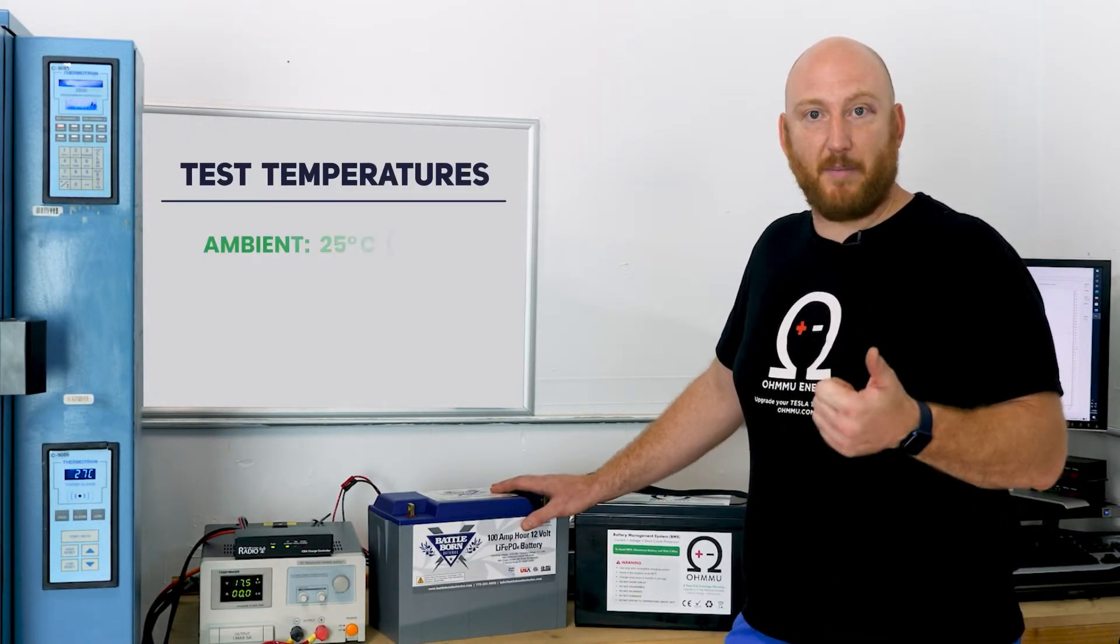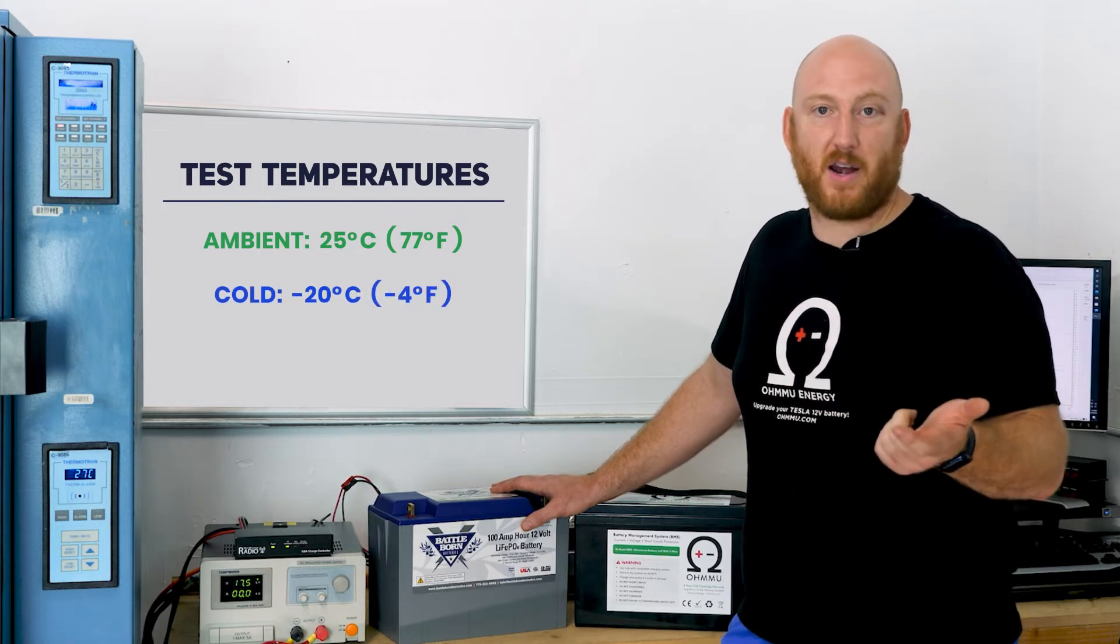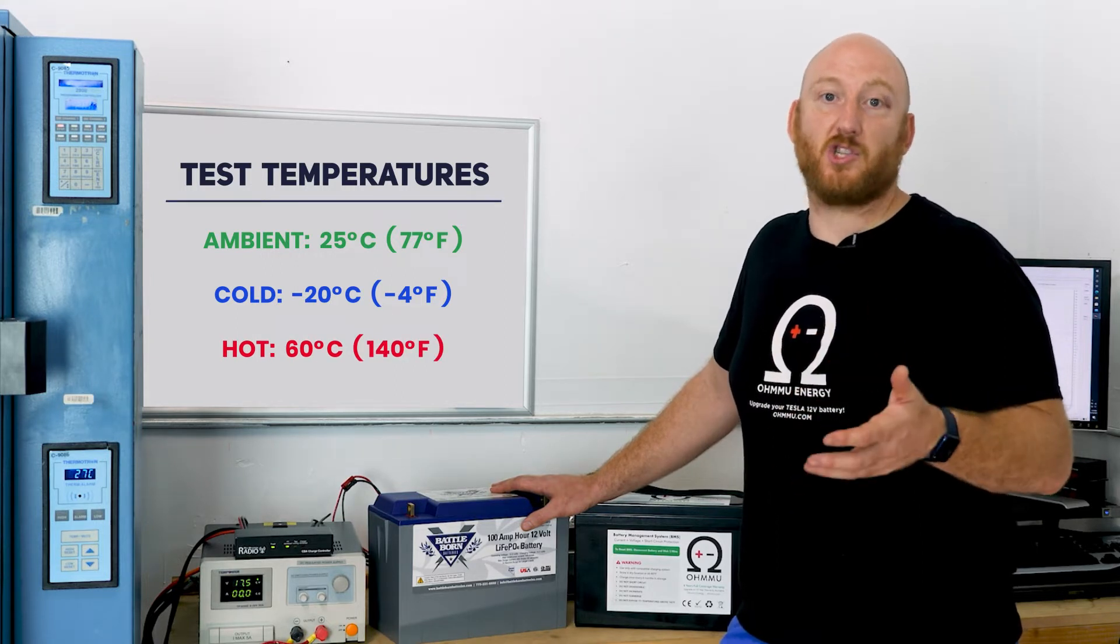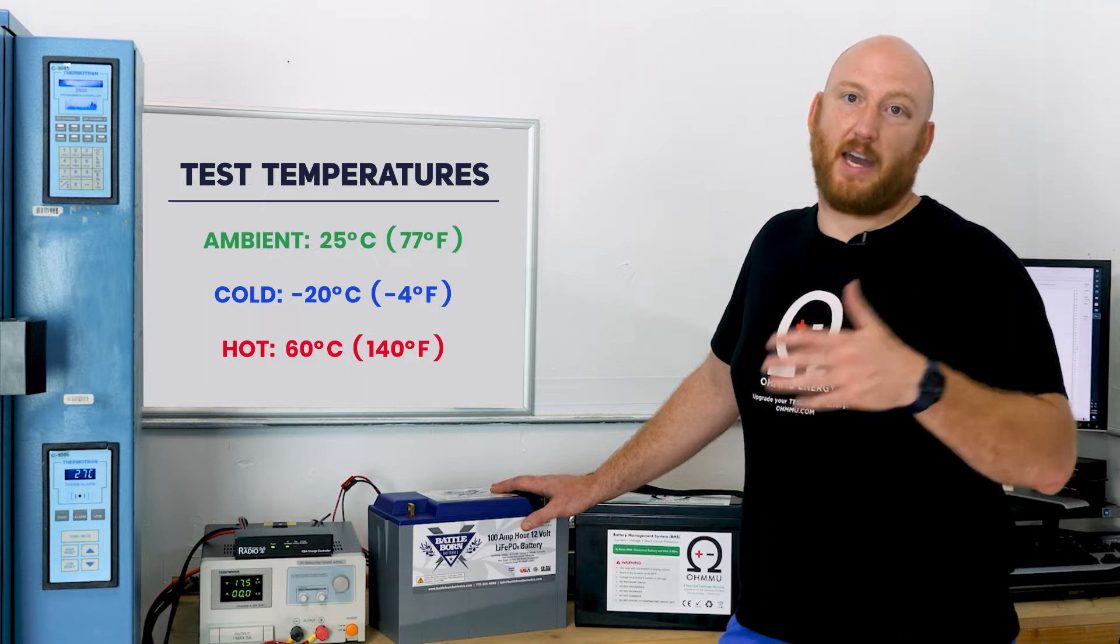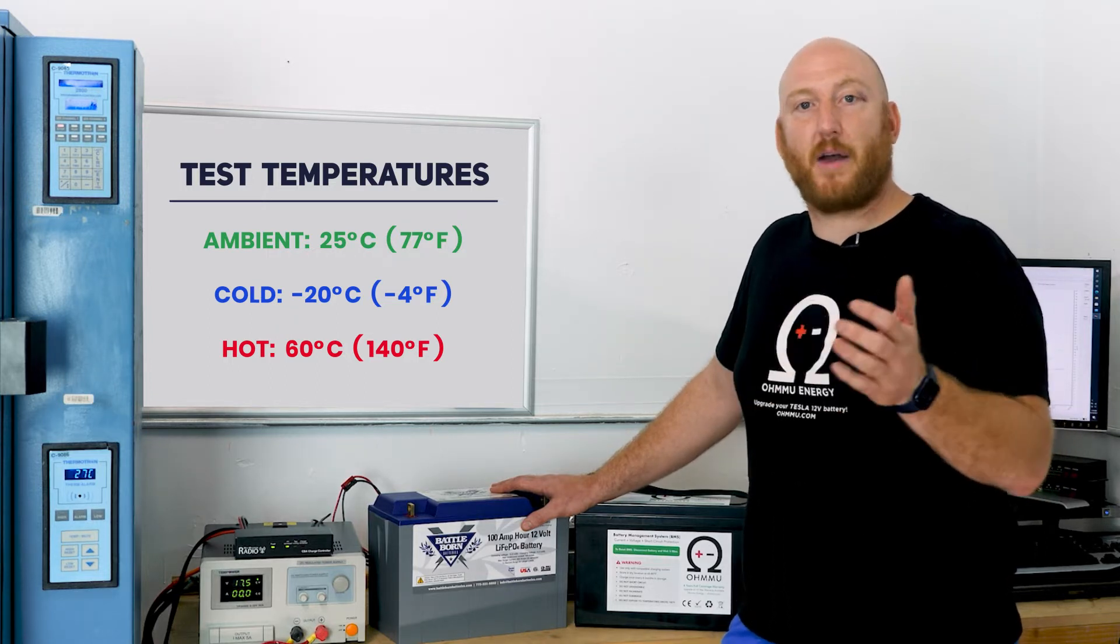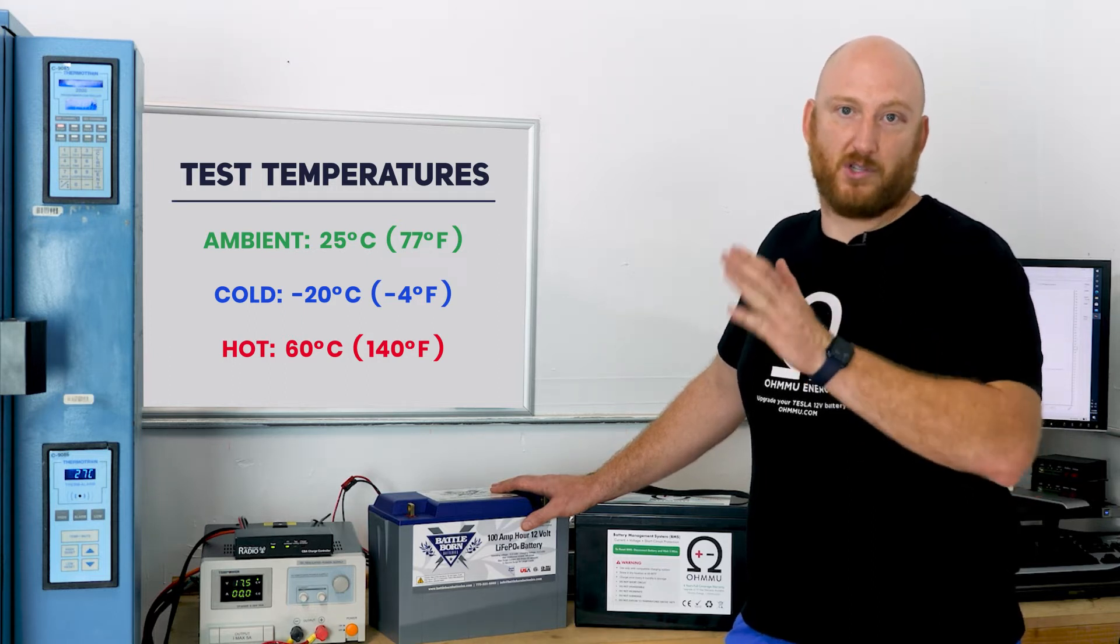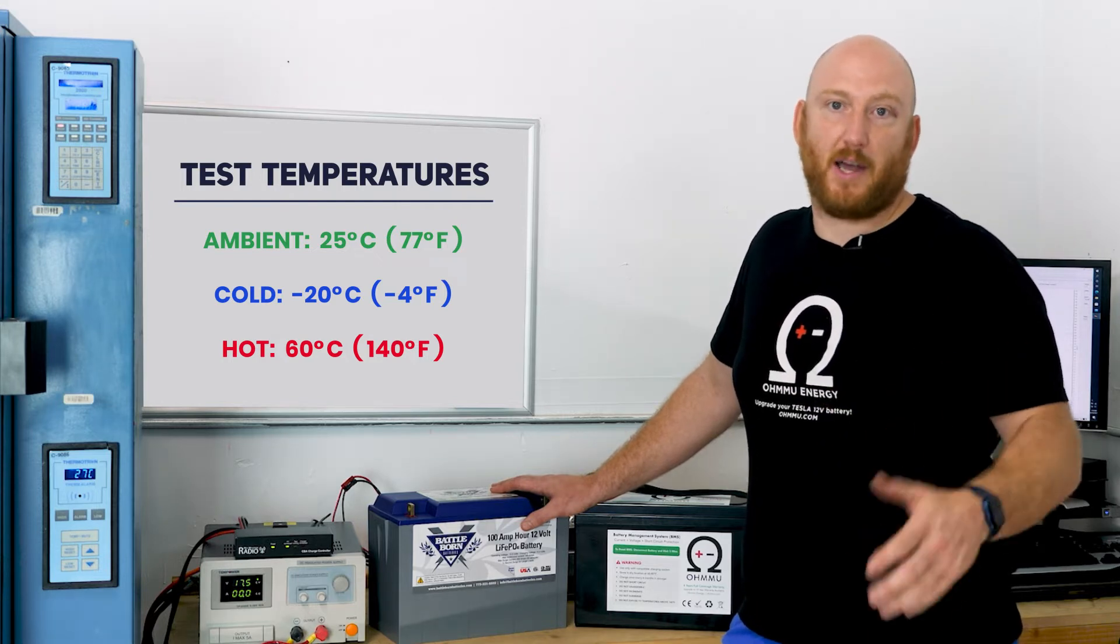The different temperatures that we're choosing to test at are ambient and then negative 20 degrees Celsius, which is negative 4 Fahrenheit. And then the last one will be at 60 degrees Celsius, which is about 140 degrees Fahrenheit. We feel like these are good representations of the two more moderate extremes of use for these batteries, and then of course neutral being ambient.